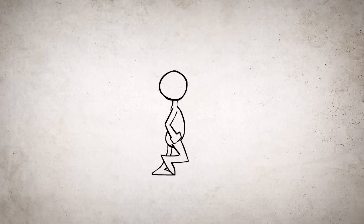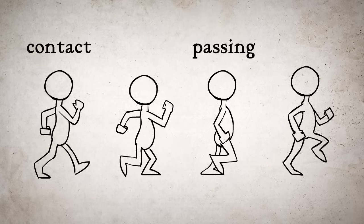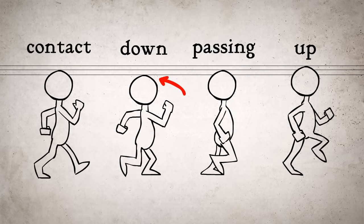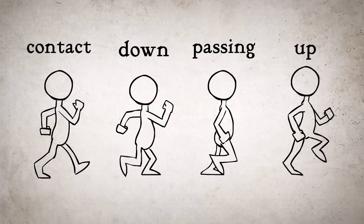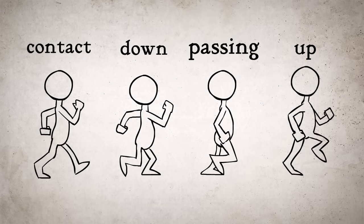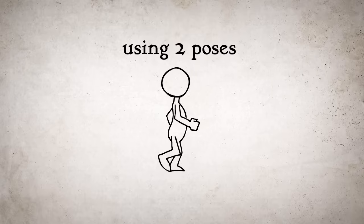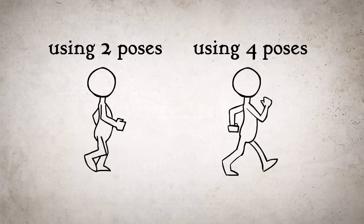We could call this done. But in order to make the walk cycle more realistic, there are two more poses that we should add, called the up and down poses. These are where the head is highest and where it's lowest in the cycle. The down pose happens right after the contact pose, and the up pose happens after the passing pose. If we didn't add these poses, the walk would look very flat, with no bounce at all. So if you're just starting out, it's okay to just use two poses, but know that ultimately there are four poses that go into each step of a walk cycle.